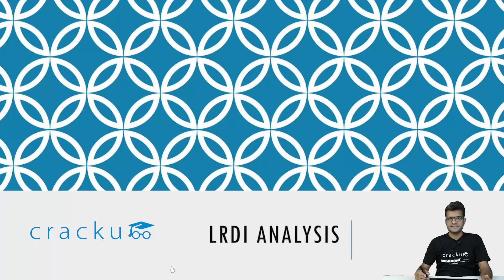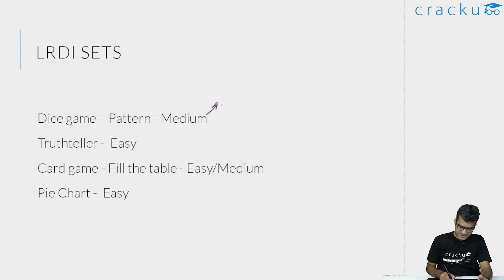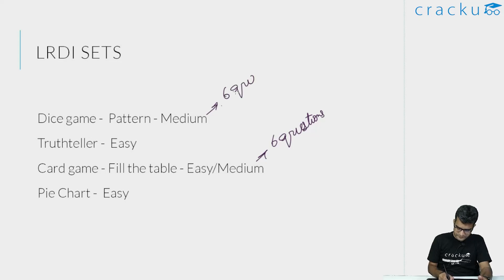The LRDI section had four sets. There were two sets which had six questions each and two sets which had four questions each.